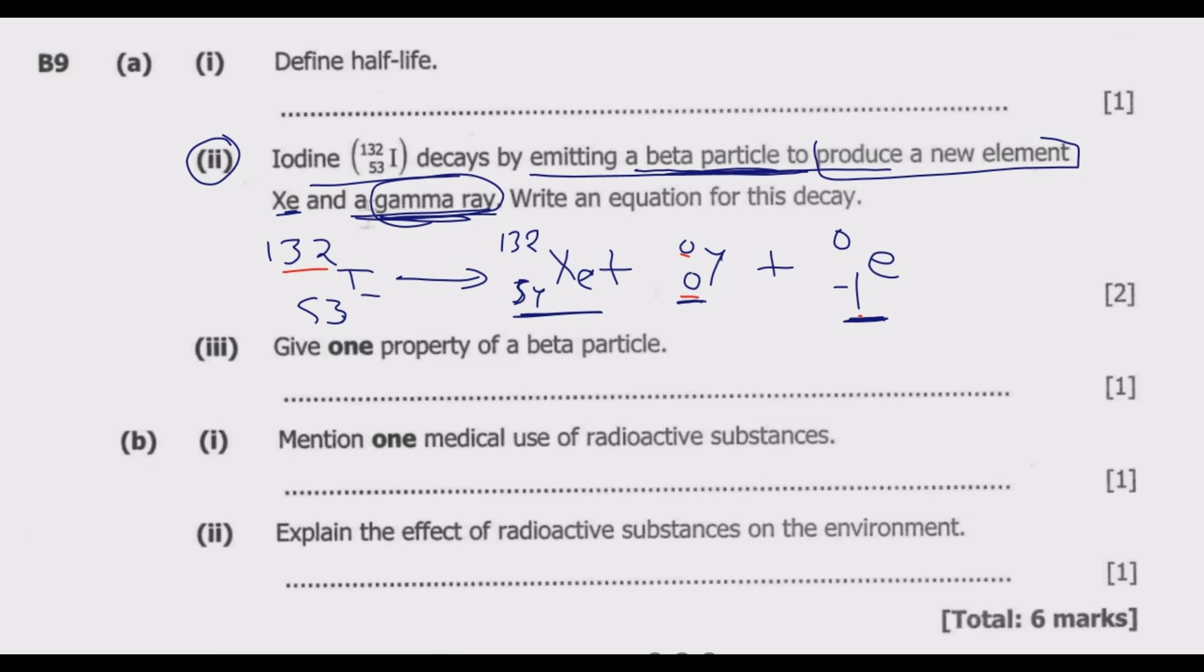Then because it's just an electron, it is lighter, then it moves at a very high speed. Then the third one is the fact that beta particles can be deflected under the influence of magnetic or electric field. So basically you have to choose one. So in this case, I'm going to go with the last one. So I'm saying a beta particle is deflected under the influence of magnetic as well as electric